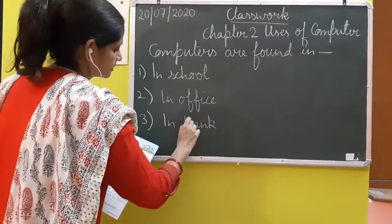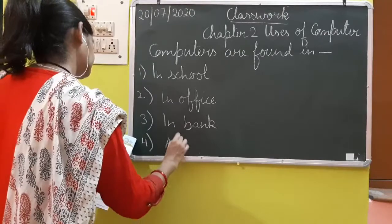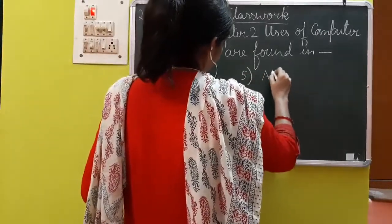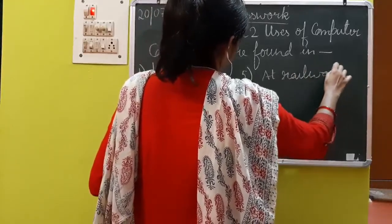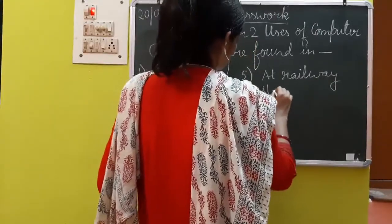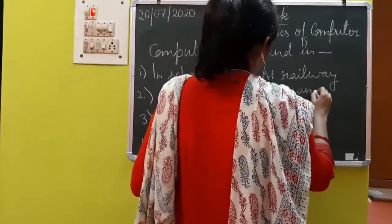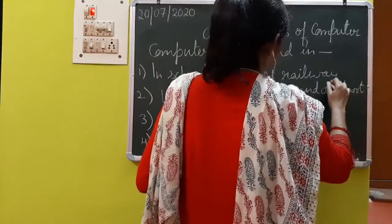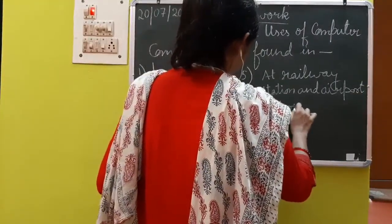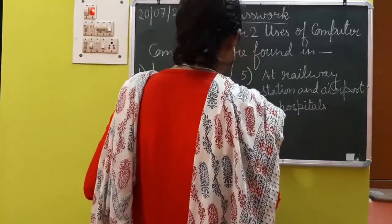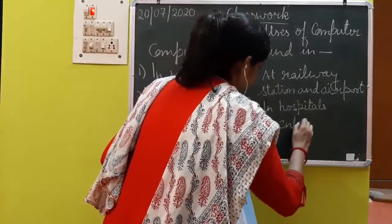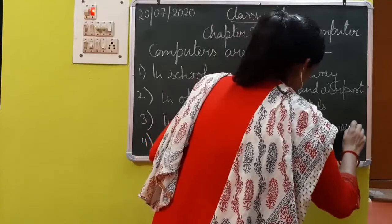In bank also we have computers. Then the fourth place: at home also we have computer. Then the fifth place: at railway station and airport. Then the sixth one: in hospital. Then it is used in entertainment.